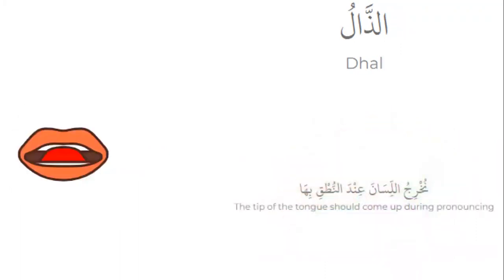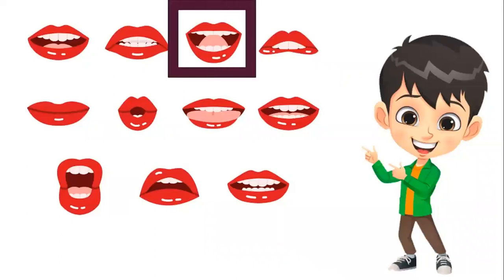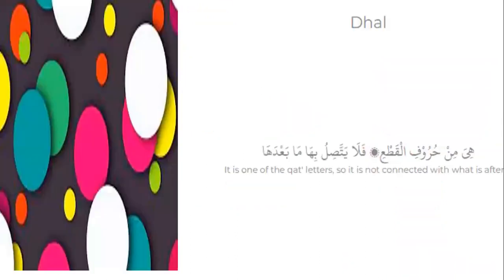The tip of the tongue should come up during pronouncing Zal. The shape of the mouth when you pronounce Zal is like when you pronounce the letter Dal. It is one of the qata' letters, so it is not connected with what comes after it.